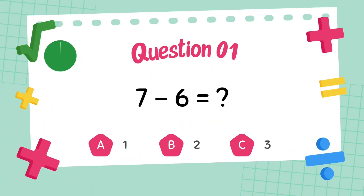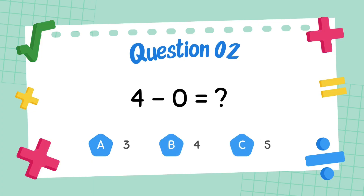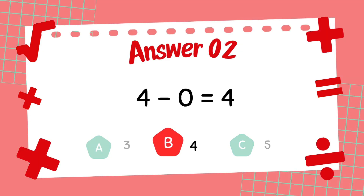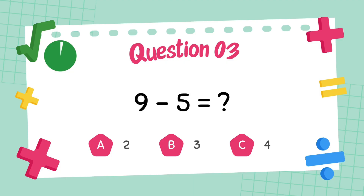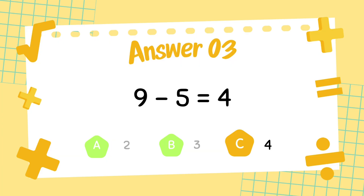What is seven minus six? The answer is one. What is four minus zero? The answer is four. What is nine minus five? The answer is four.